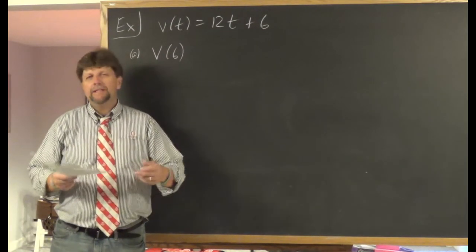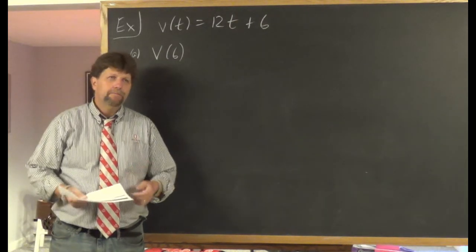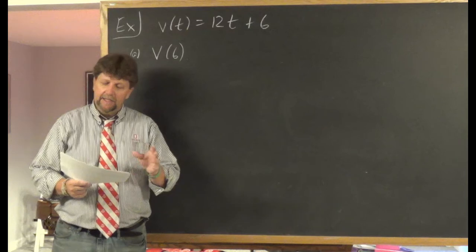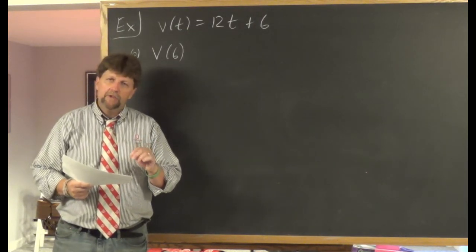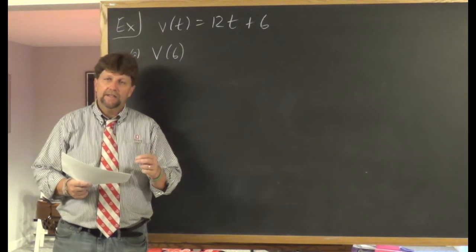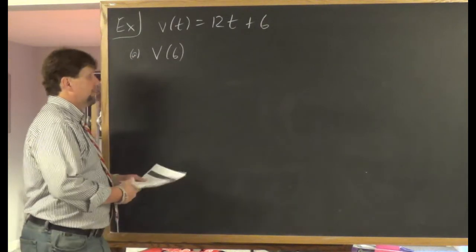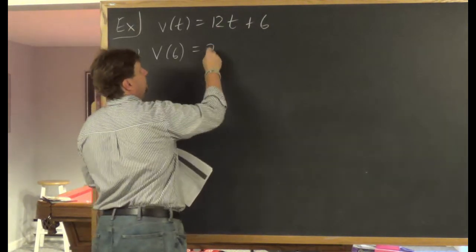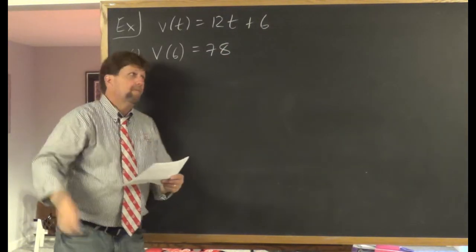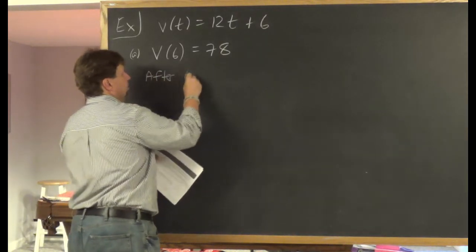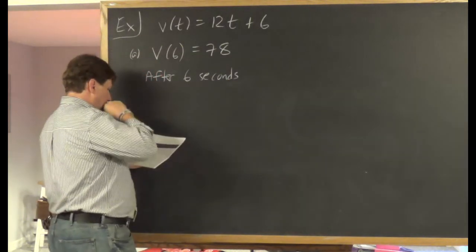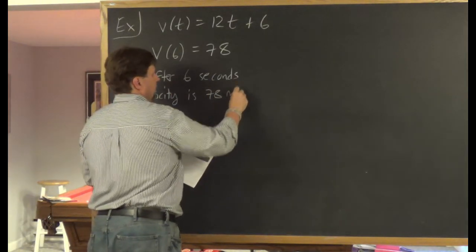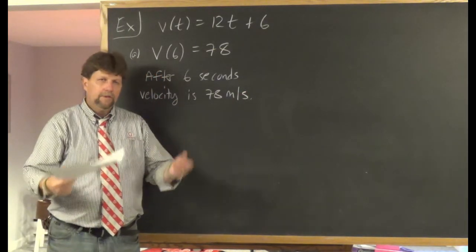For part A, evaluating V(6): put 6 in for t, so 12 × 6 = 72, plus 6 = 78. V(6) = 78. Interpretation: after 6 seconds, the velocity of the object is 78 meters per second. That's it for part A.